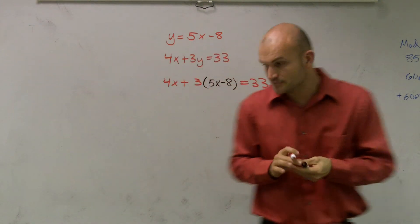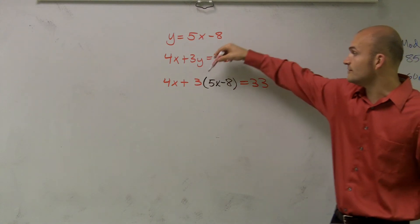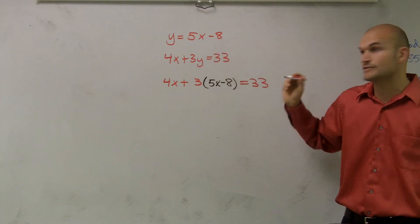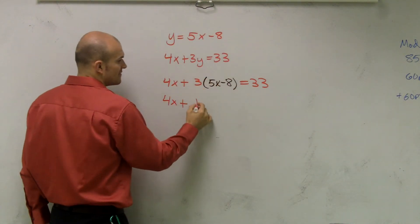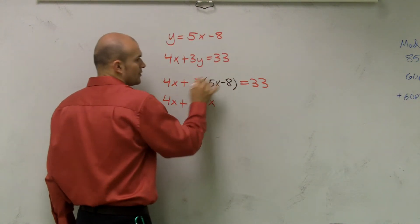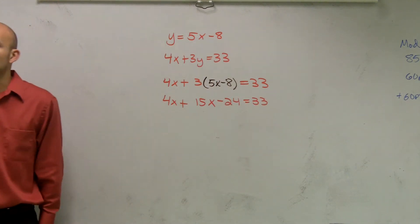So now what I'm going to do is I have 4x plus 3 times 5x minus 8. Now I have to use my distributive property. Whenever you have a number outside parentheses, you have to distribute it in. So you have 4x plus 3 times 5x is 15x. 3 times negative 8 is negative 24 equals 33.